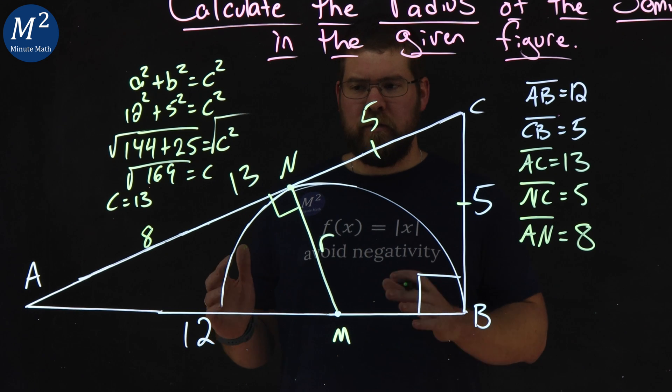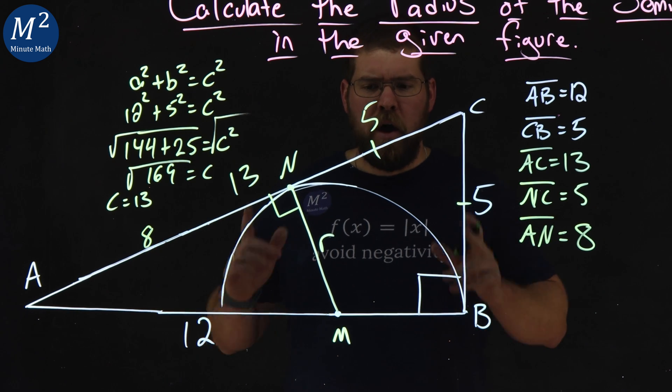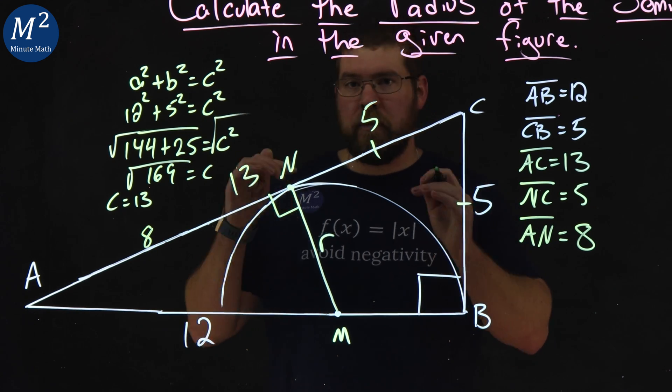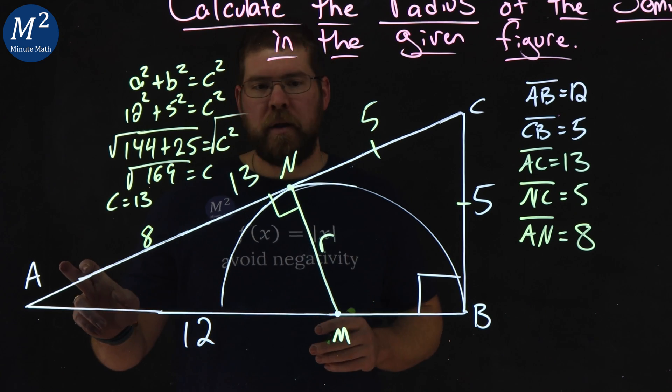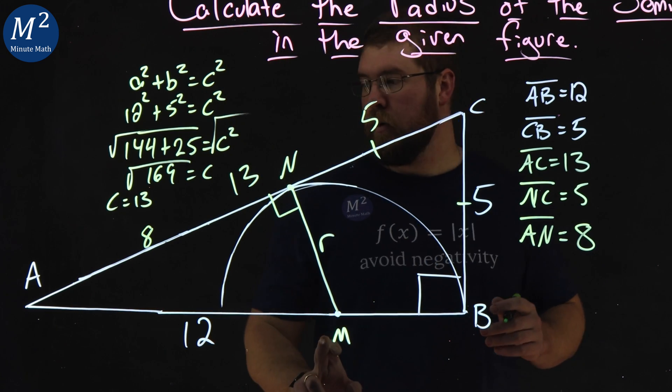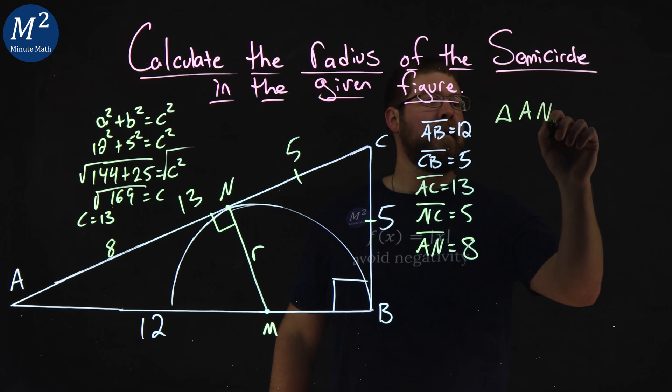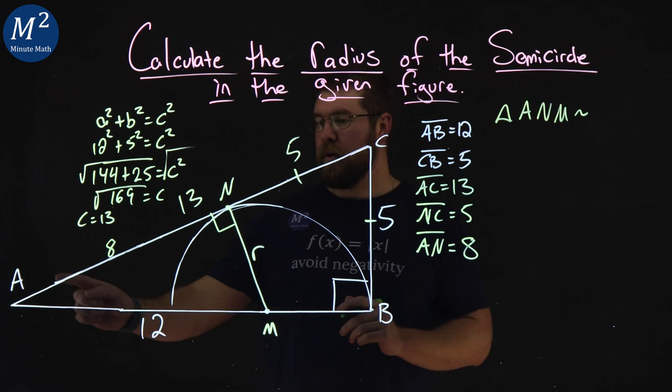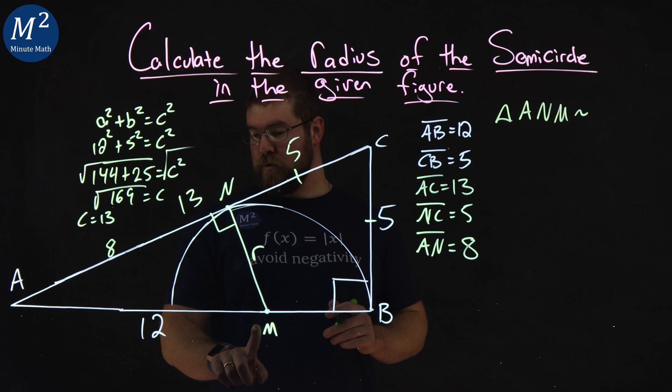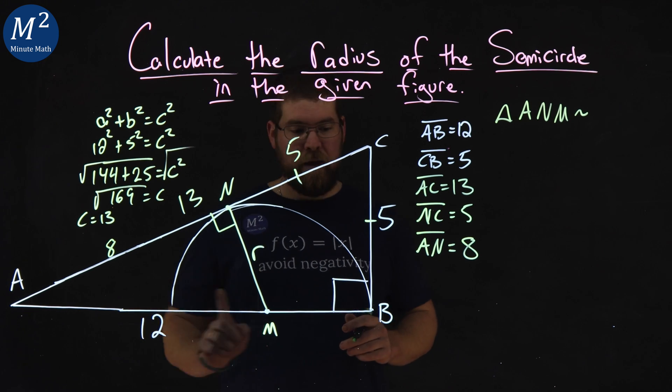Now, with this information, where can I go? Hopefully, you're thinking similar triangles. So, let's go write it out. Triangle A, N, M, right? So, triangle ANM is similar to triangle ABC.